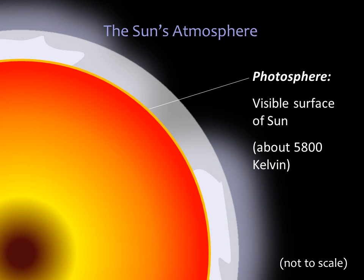Below the chromosphere is the photosphere — this very thin layer is the lowest layer of the atmosphere and the visible surface of the sun. It is far less dense than Earth's atmosphere and has a temperature of about 5800 kelvin. If you could fly into the sun's atmosphere, you could look back and see the stars through the layers until you reach the photosphere. Once below it, you are completely engulfed inside the sun.